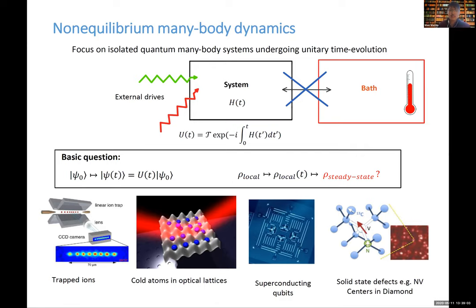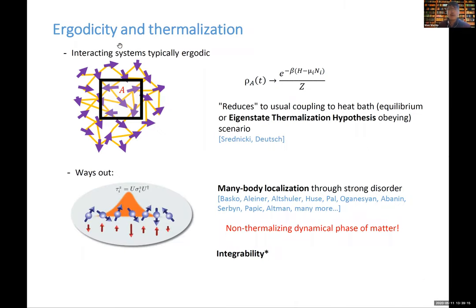If the system is interacting and ergodic, it can exchange energy with the rest of the system so that locally at late times it tends towards a thermal ensemble. This reduces to the usual bath-coupling scenario — even without a bath, the subsystem behaves as if it were coupled to one. The temperature and chemical potentials are set by the global energy and conserved charges. This is what we call the eigenstate thermalization hypothesis (ETH) scenario.